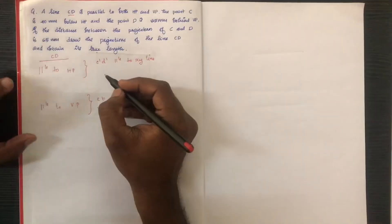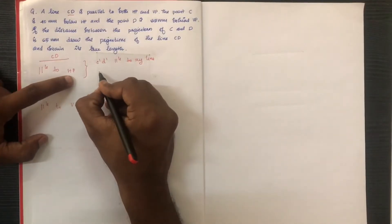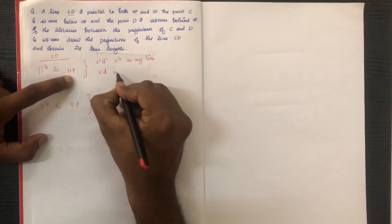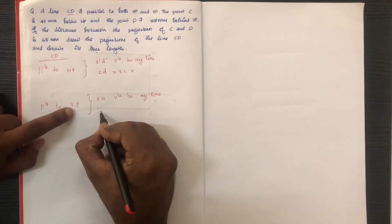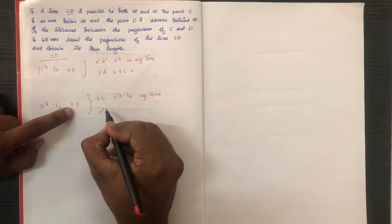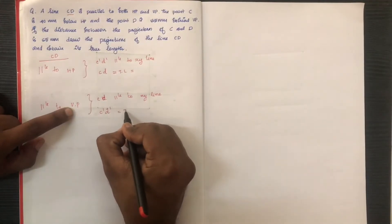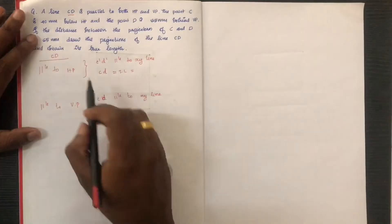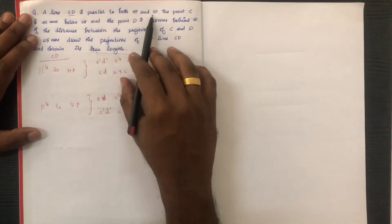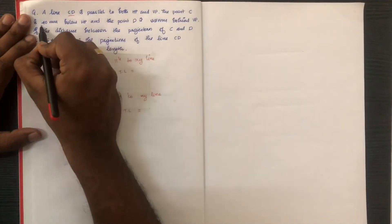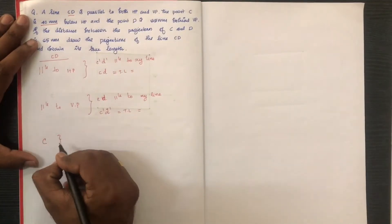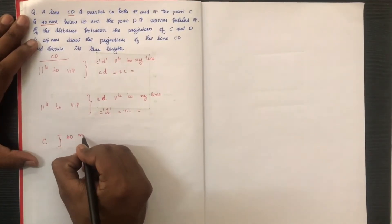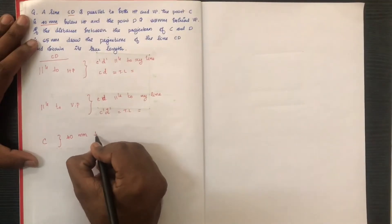In the plan, CD is parallel to XY. In the elevation, c-dash d-dash is parallel to XY — the true length value is obtained in both views. Now, line CD is parallel to both HP and VP. Point C is 40mm below HP.